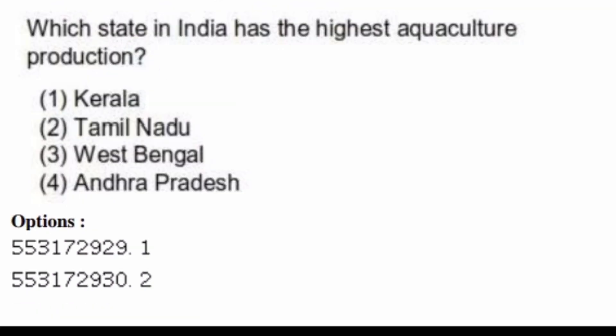Which state in India has the highest aquaculture production? Options are: Kerala, Tamil Nadu, West Bengal, Andhra Pradesh. The right answer is option two, Tamil Nadu.